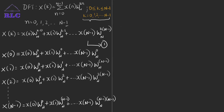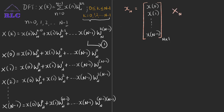Now we have a system of equations which can be represented in matrix form. Let small x_N be an N-point vector to represent signal samples — that is x[0], x[1], and so on up to x[N-1] — which is an N×1 matrix. Next, let capital X_N be an N-point vector to represent frequency samples, given by X[0], X[1], X[2], and so on, with the last frequency sample X[N-1], again an N×1 matrix.